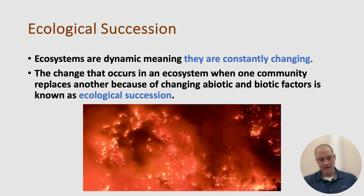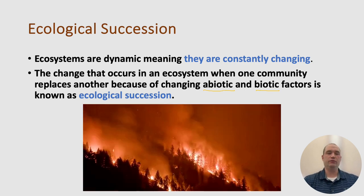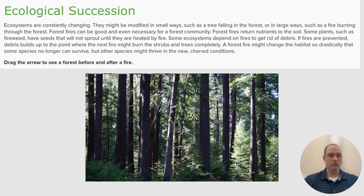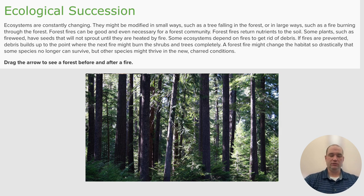Ecosystems can be modified in small ways, such as a tree falling in the forest, or in large ways, such as an entire forest burning. Forest fires can be necessary for a forest community — they return nutrients to the soil, and some plants, such as the fireweed, have seeds that will not sprout until they are heated by fire. Some ecosystems depend on fires to get rid of debris, and if fires are prevented, debris builds up to the point where the next fire might burn the shrubs and trees completely.